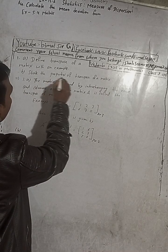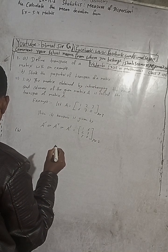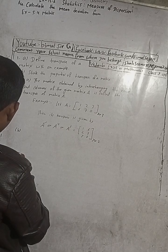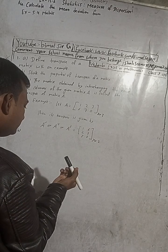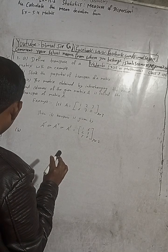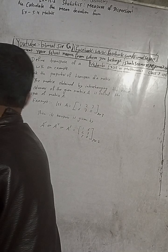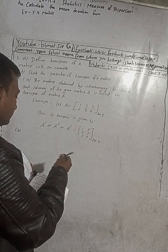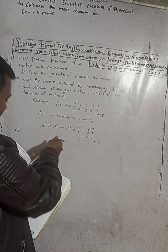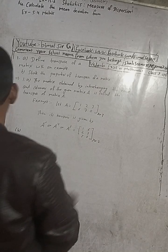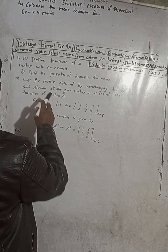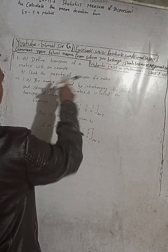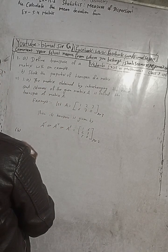That is the solution for part (a). Now part (b): state the properties of transpose of matrix. Okay, so properties of transpose of matrix — we have to write at least two or three properties.